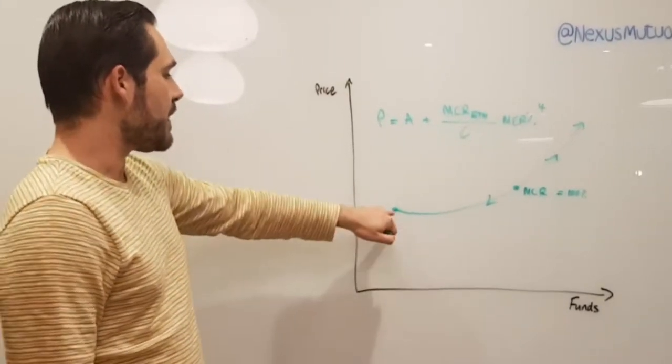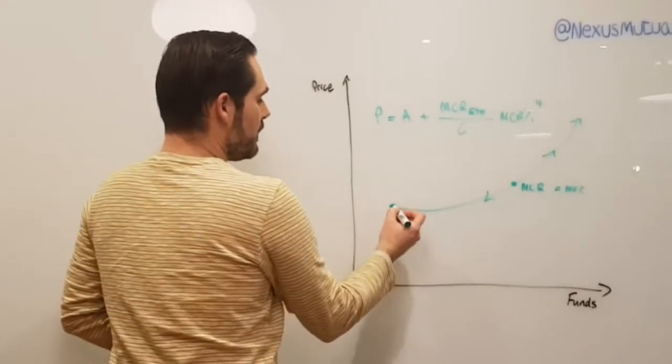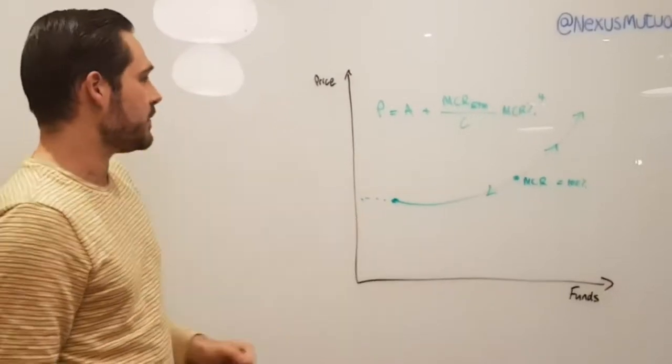If, for example, the mutual runs out of money and gets all the way to zero, then the pricing is at this point, which is basically where we start. We start at zero.